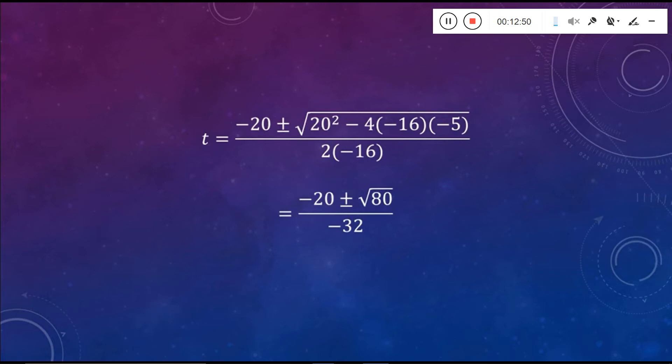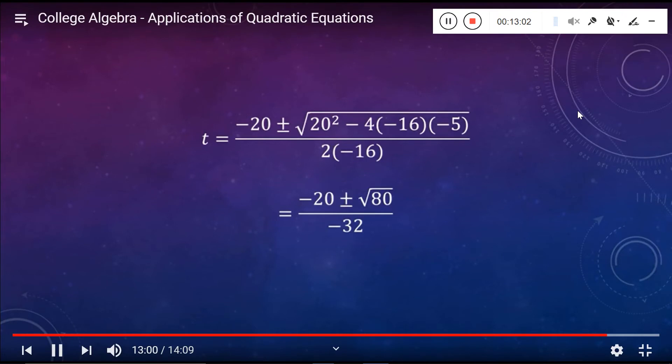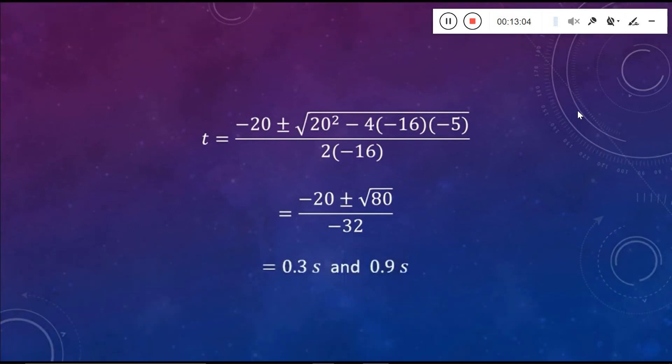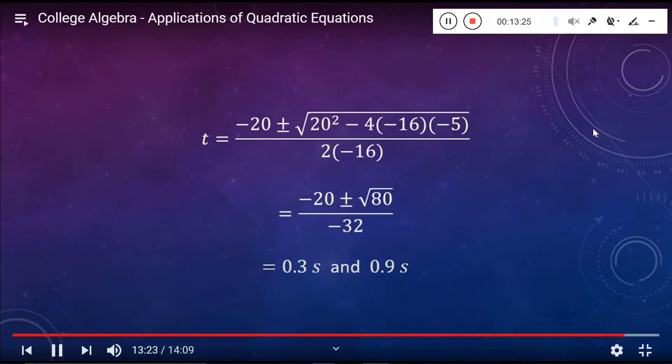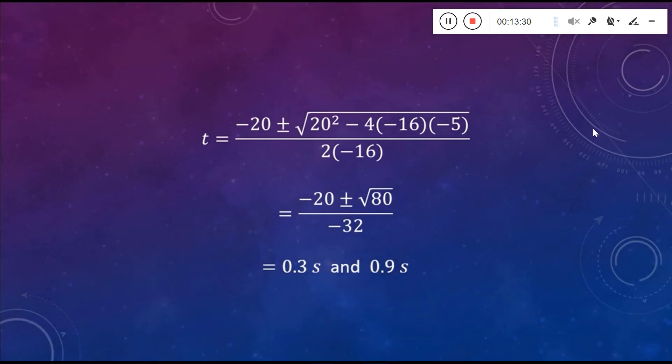Again, we have the two calculations that we have to do. Negative 20 plus square root 80 all over minus 32, as well as negative 20 minus the square root of 80 all over a negative 32. And when you do those calculations, you get 0.3 seconds and 0.9 seconds. So this thing goes up and then comes down very, very quickly. There's not a whole lot of speed going on with this object that was launched here. You could almost think of this as kind of like a whiffed launch. Launch didn't quite go as they had hoped here.